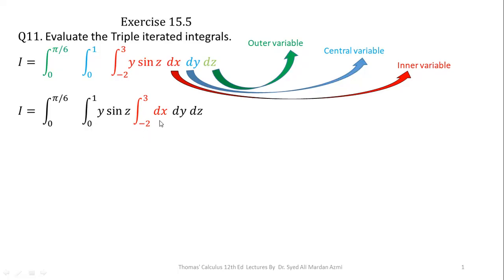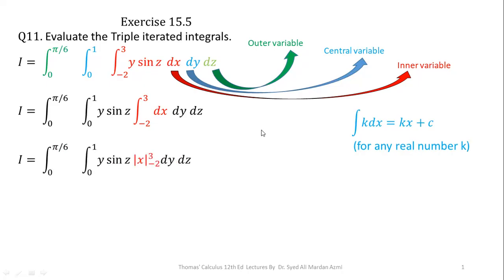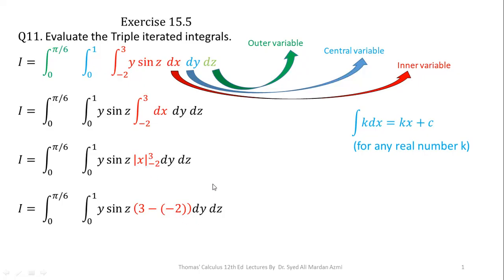The integration of dx can be done using the standard formula. Here the value of k is 1, so the integration of 1 dx is simply x, evaluated at limits −2 to 3. In the next step, we apply the fundamental theorem of calculus — upper limit minus lower limit. We replace x with 3 for the upper limit and x with −2 for the lower limit. So 3 minus (−2) = 3 + 2 = 5. You can take this 5 outside of the remaining integrals.